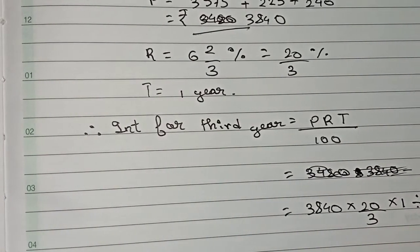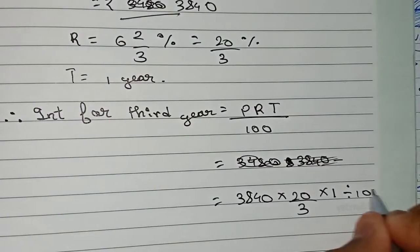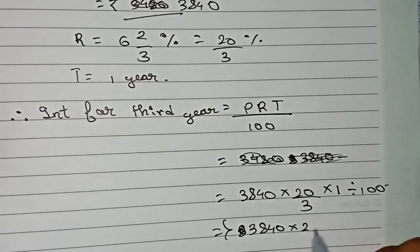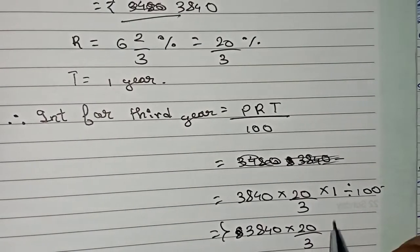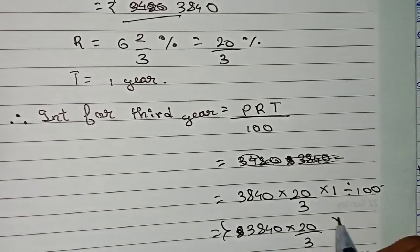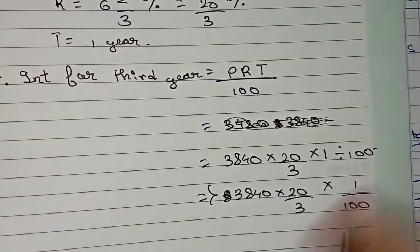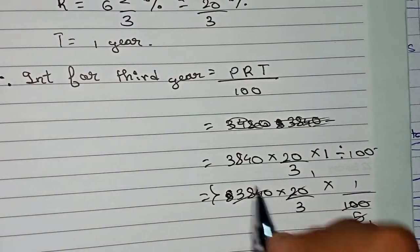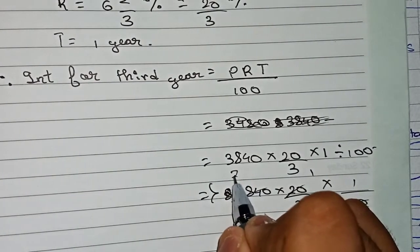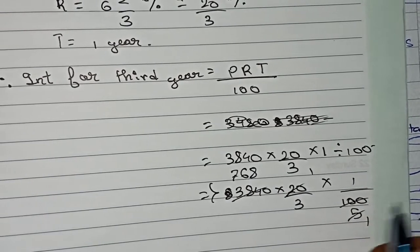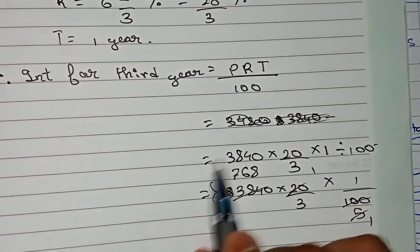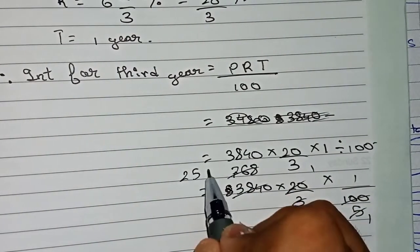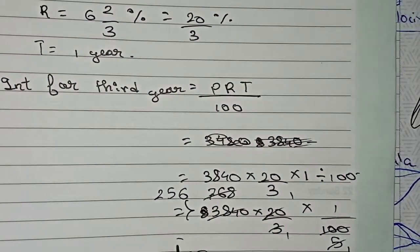Substituting: I = 3840 × (20/3) × 1 / 100 = 3840 × 20 / (3 × 100). Cancelling 20 and 100 gives 1/5; then 3840 and 3 simplify: 3840/3 = 1280, and 1280/5 = 256. The interest for the third year is ₹256.